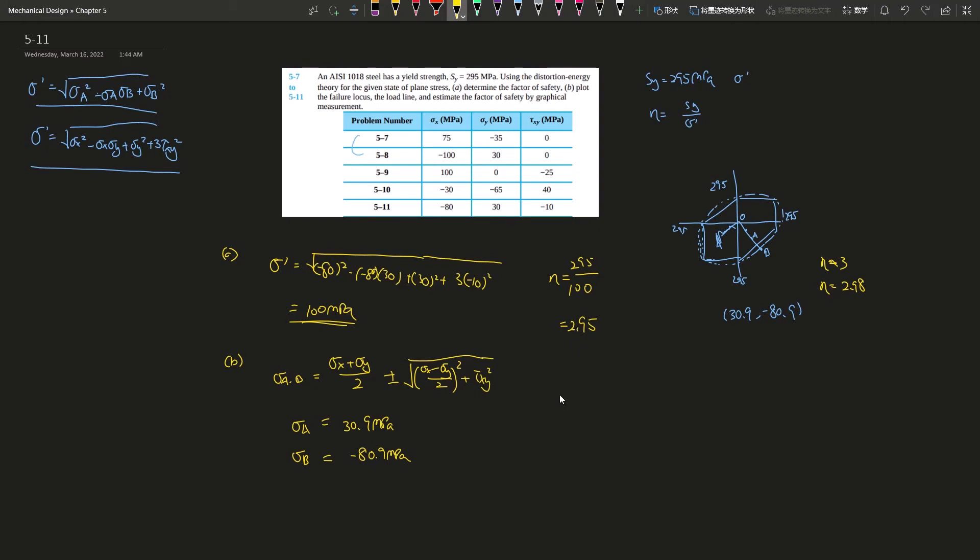For maximum shear stress, it's the same thing but point B would just be here instead. The straight line is MSS and the dotted line is von Mises.